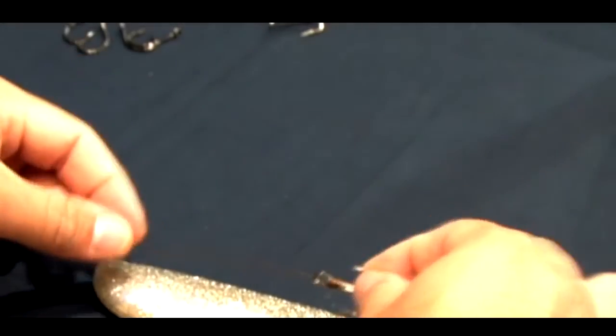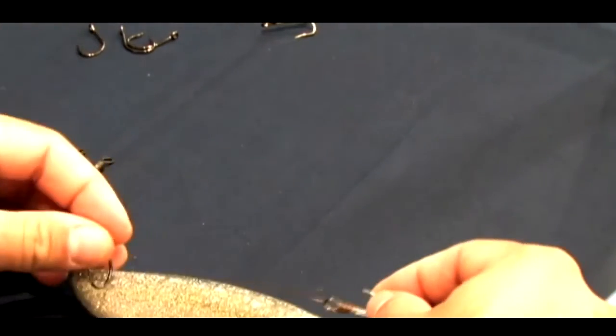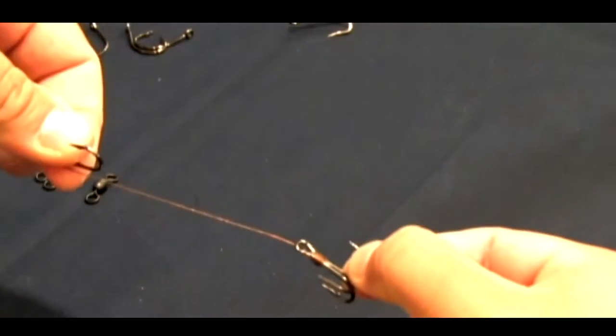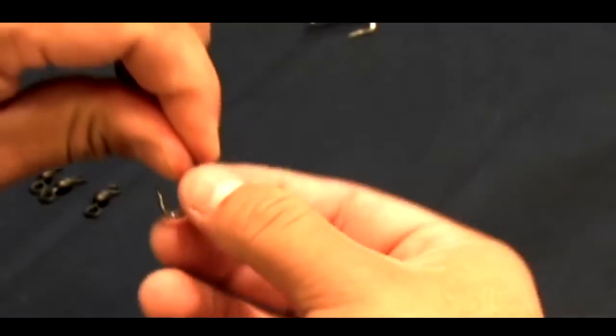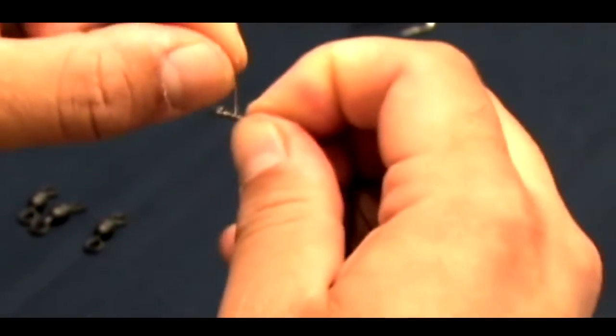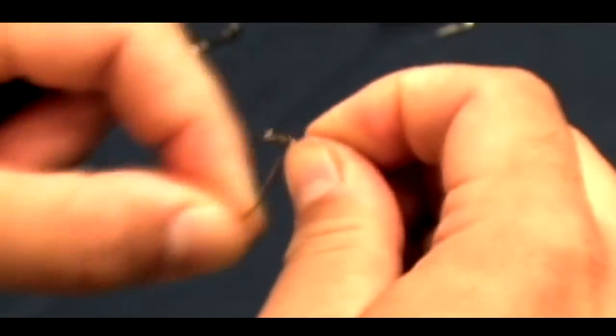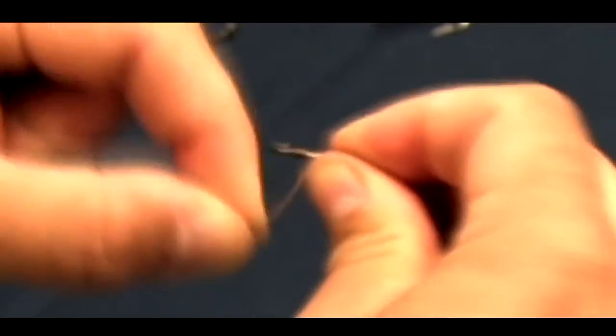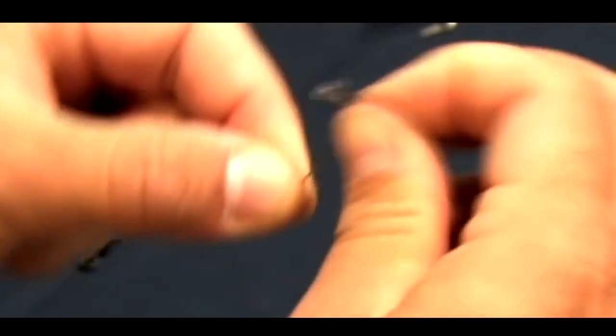Now based on the size of the bait that you have that day, you can gauge how far apart you need to put your hooks. Once again, you just lay the hook against the wire, and you start to wrap, working back towards the bend in the hook, seven to eight wraps.